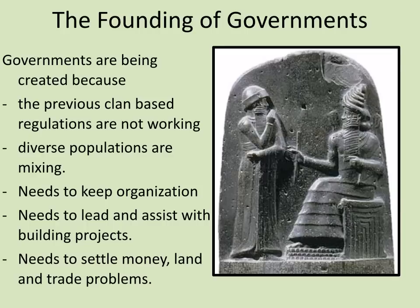One of the big things that comes out of period one is governments. We live in a world today we couldn't imagine without a government, but this is the time when we're creating government. We find that governments are getting created the moment people of different ethnicities, backgrounds, and clans start living together, and building projects are starting to increase. Governments are required for diverse populations — being fair and balanced to all, keeping organization, settling money, land, and trade problems, and making sure clans are working together and not against each other.